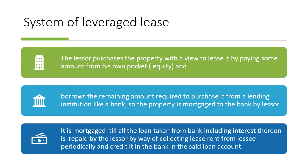The loan is repaid with the help of the rental income received from the lessee periodically, and the same amount is credited to the loan account. The lessor spends his own money, borrows funds from the bank, purchases the equipment, and leases it to the lessee. The lessee pays rental income periodically, which the lessor uses to repay the EMIs until the entire loan is settled.